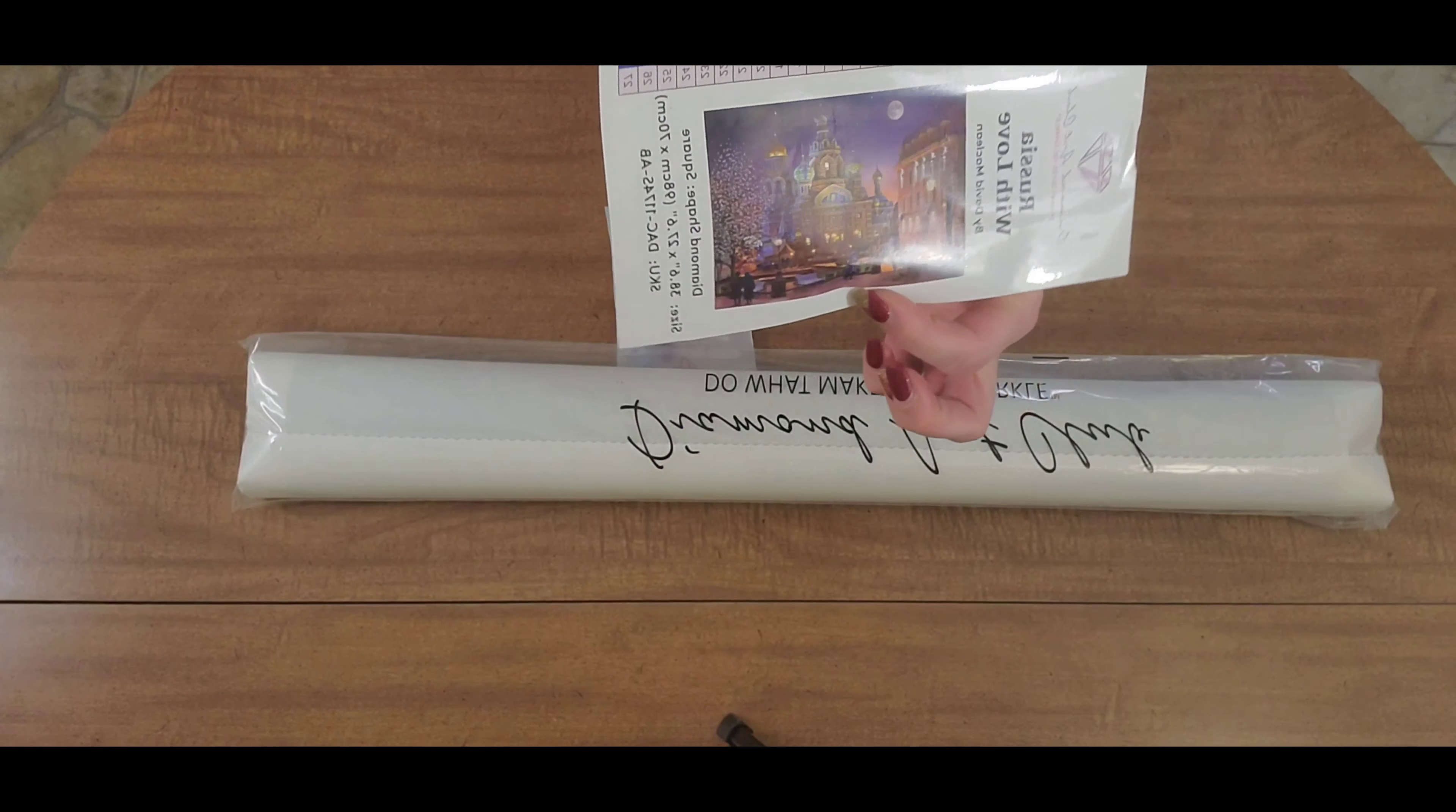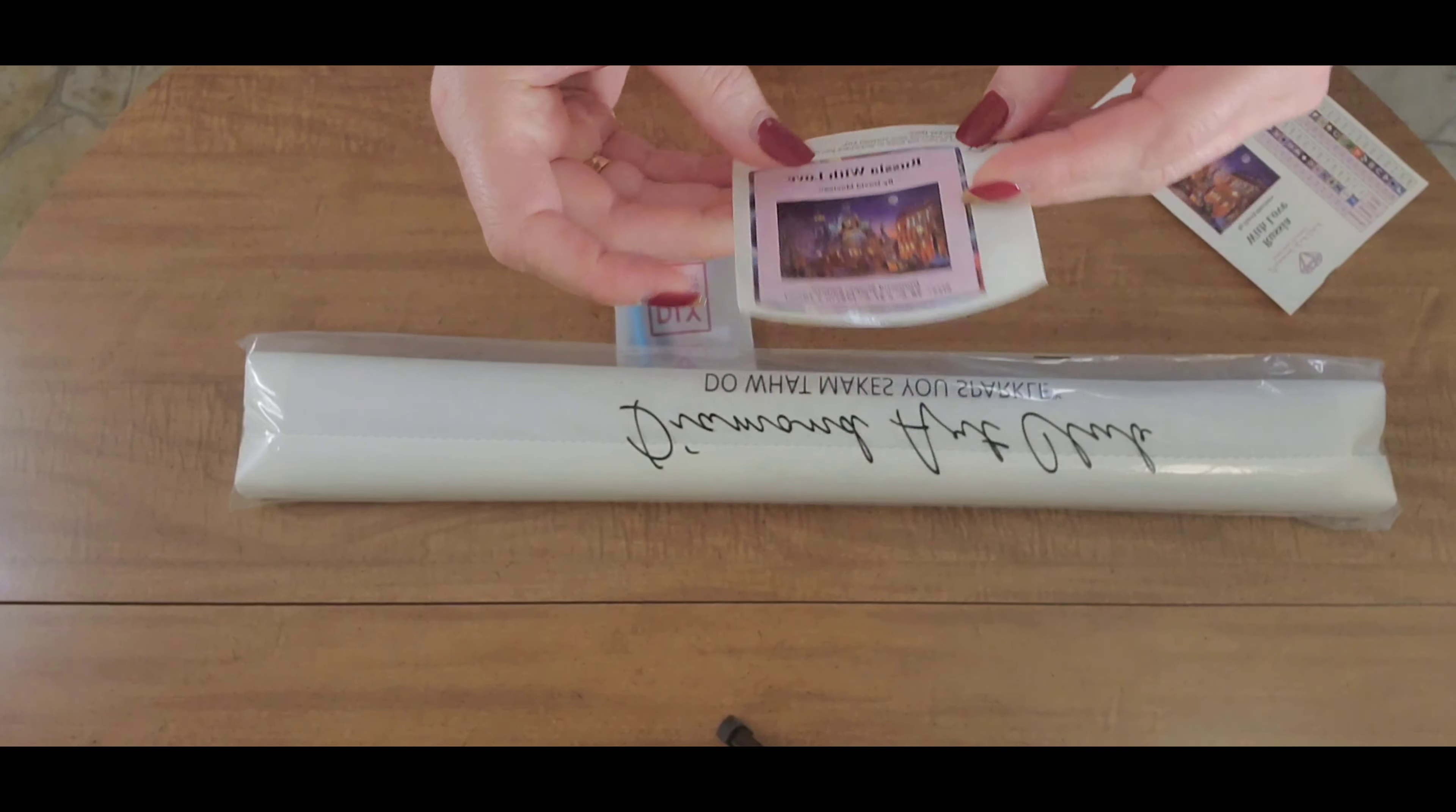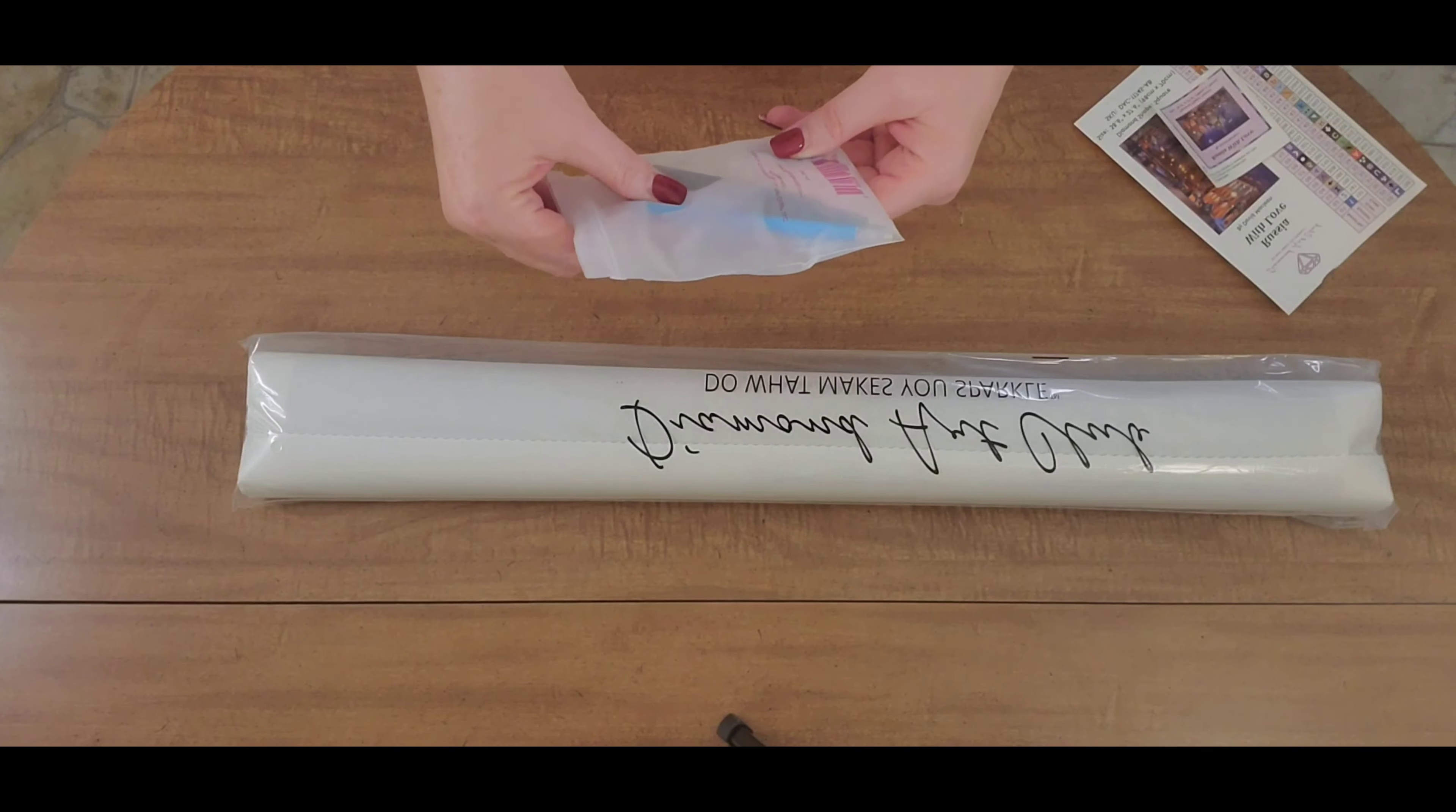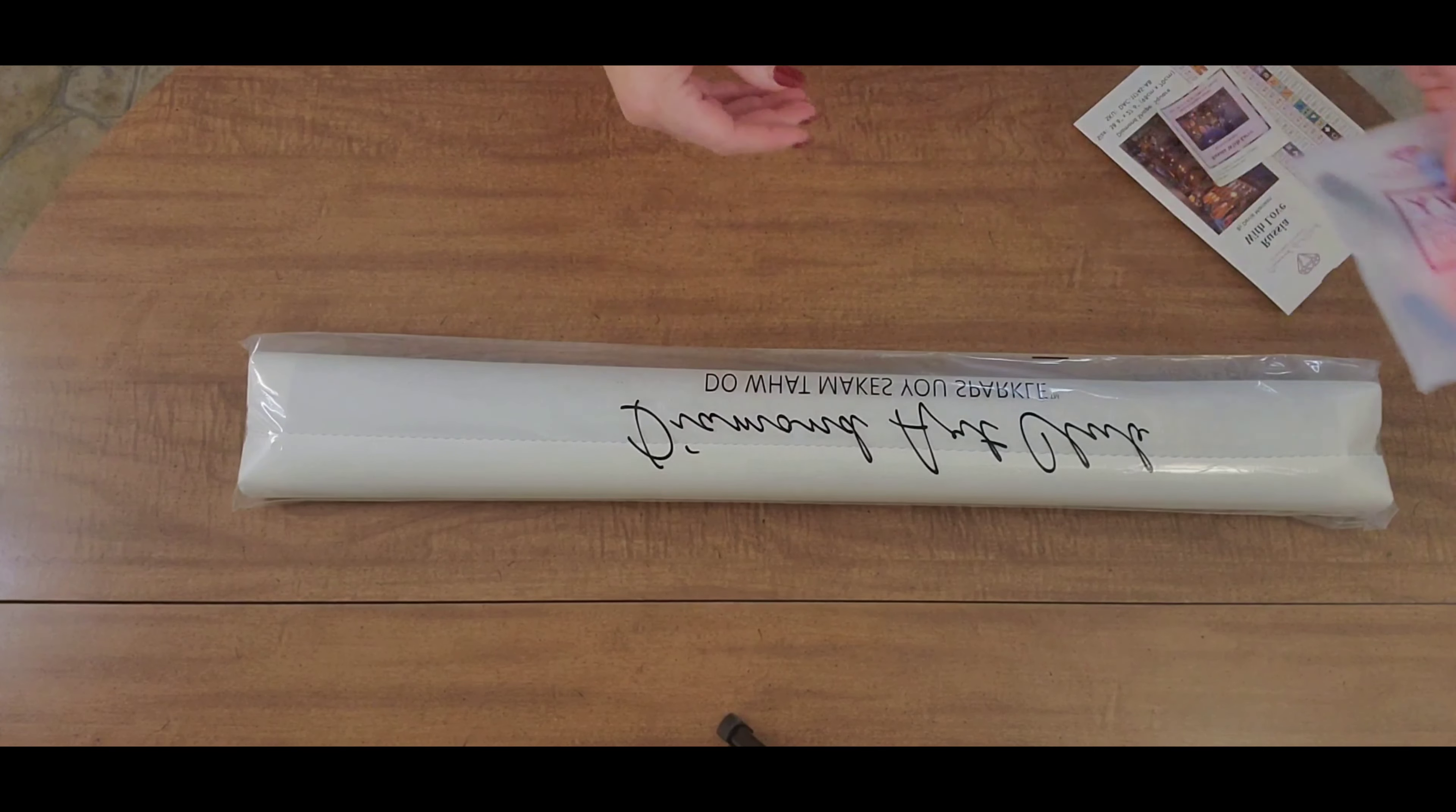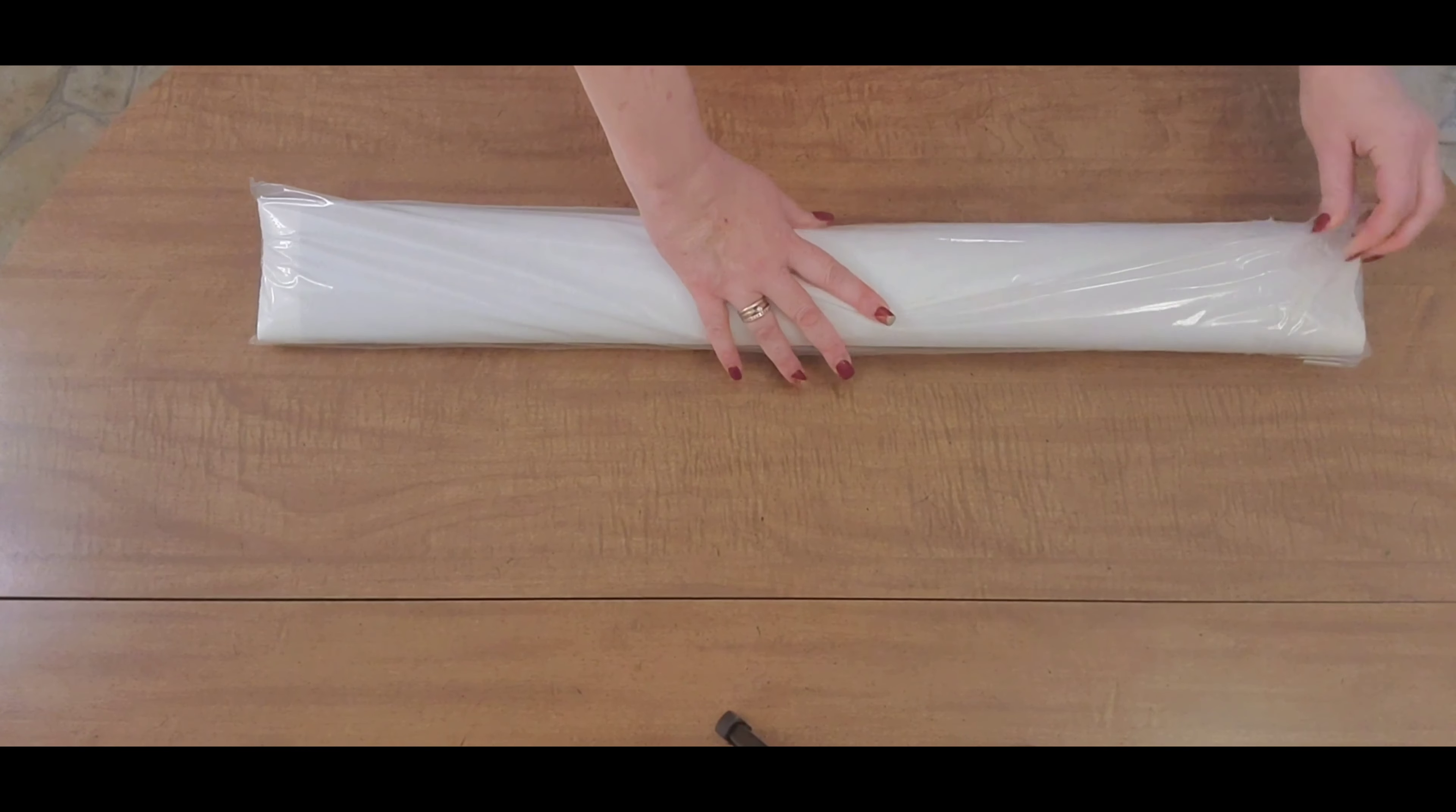Alright, let's see what we have. So we have everything out here and we have our large schematic. There are 56 colors in this painting and there are two ABs. This is absolutely gorgeous.